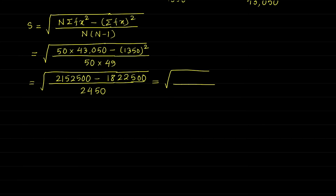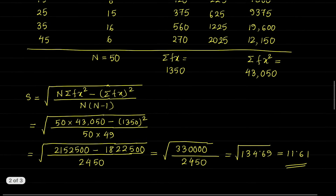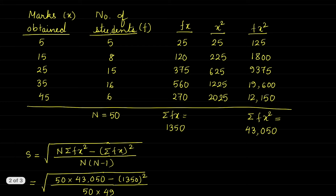After subtracting, we get 3,31,23,40 divided by 2450, which gives us the square root of 134.69, and that value is 11.61. So the standard deviation value is 11.61. In this way, depending on this formula, we find summation FX, summation FX², substitute into the formula, and we get the standard deviation.